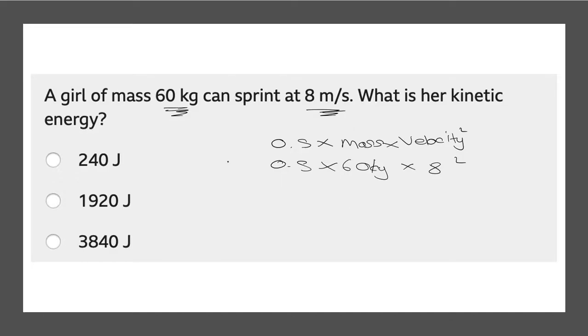Typing that into our calculator. 0.5 multiplied by 60 multiplied by 8 squared. That will give you an answer of 1920 joules. So we can tick off the correct answer and that will give you two marks. One for the correct working out and one for the correct answer.